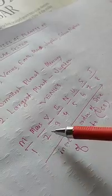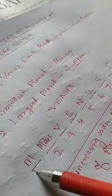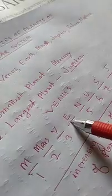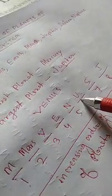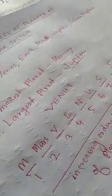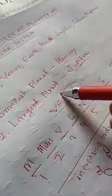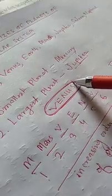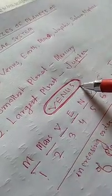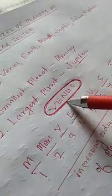The remaining position is filled by Mars. So the order comes as: Mercury, Mars, Venus, Earth, Neptune, Uranus, Saturn, and Jupiter. Remember the word VENUS — all its letters represent a planet in increasing order of size.